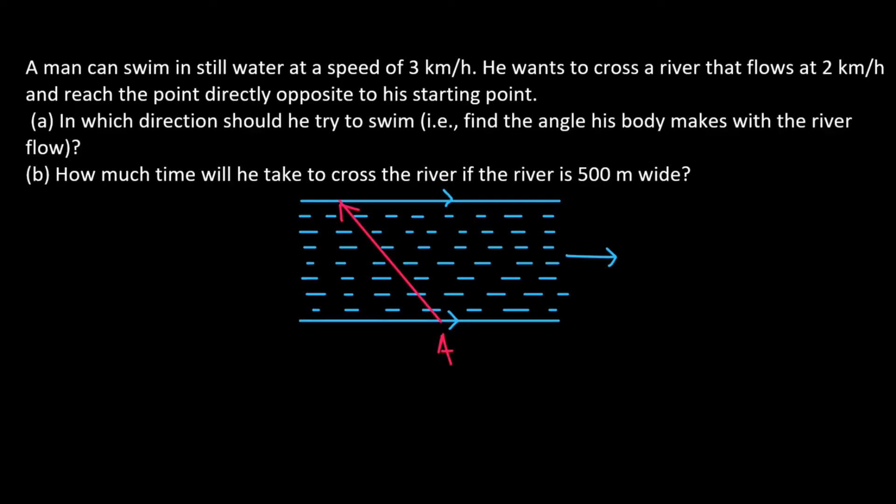If he moves in the direction indicated by this arrow, then he will reach the point exactly opposite to A. That is, to the point B.